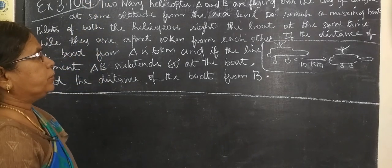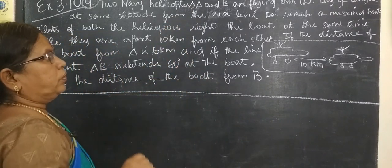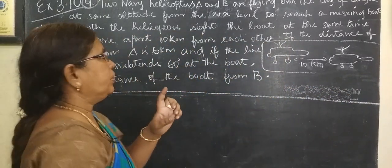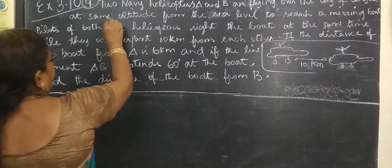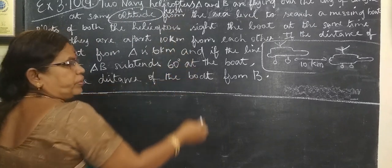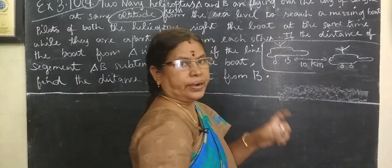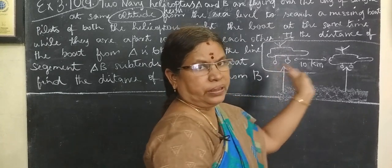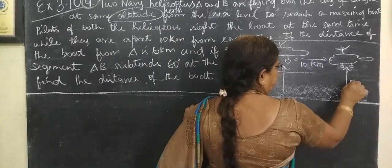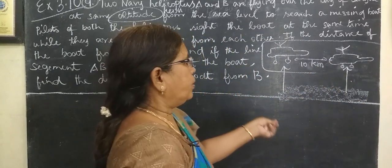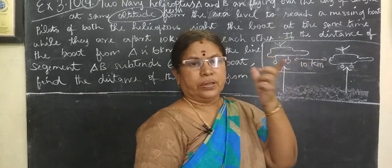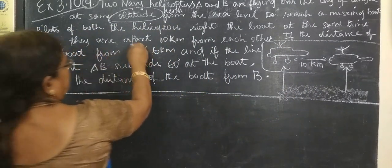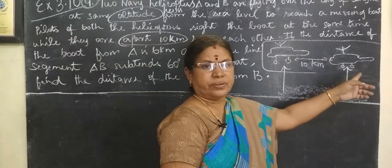Two navy helicopters A and B are flying over the Bay of Bengal. They are flying at the same altitude from sea level. The distance between them is 10 km.